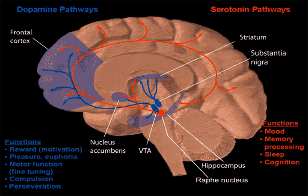To understand the potential advances in medicine that neuropharmacology can bring, it is important to understand how human behavior and thought processes are transferred from neuron to neuron, and how medications can alter the chemical foundations of these processes. Neurons are known as excitable cells because on their surface membrane there are an abundance of proteins known as ion channels that allow small charged particles to pass in and out of the cell.